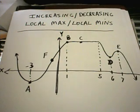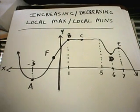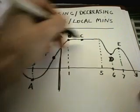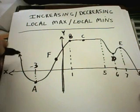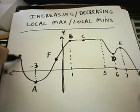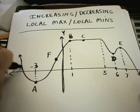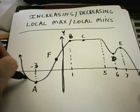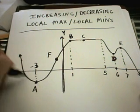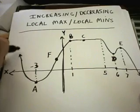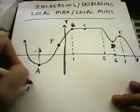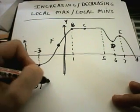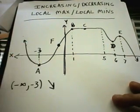So all it means for a function to be increasing—here's my graph, the solid line. Notice as you move left to right, my function is getting smaller, the y values are getting smaller and smaller. What we would say is, on the interval from negative infinity to negative 3, the function is decreasing.